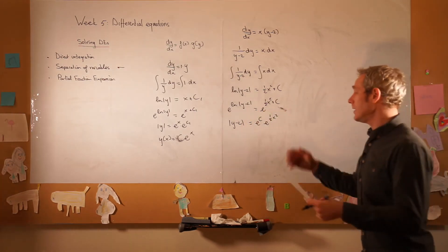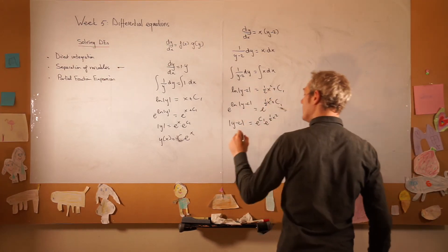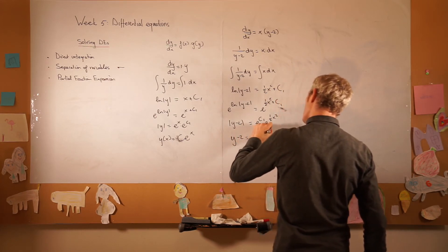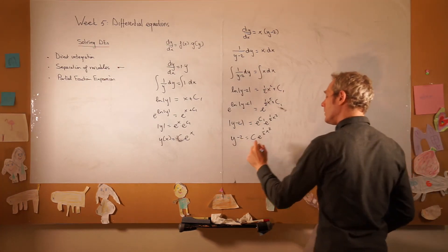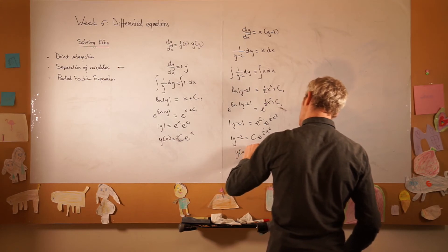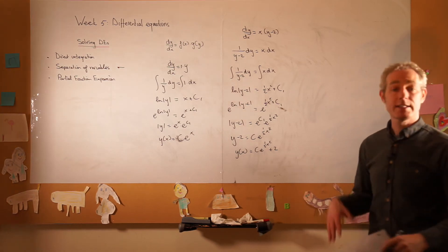And we remove the absolute values, let's call this c1, y minus 2 is equal to c e to the power of one half x squared, and the only thing left to do is move this 2 to the other side, and we have our solution, y(x) is equal to c e to the power of one half x squared plus 2.